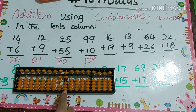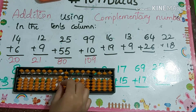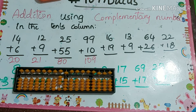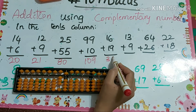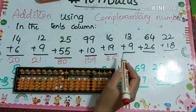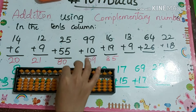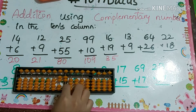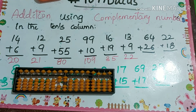Next: 16 plus 19. For the 9, we use plus 10 minus 1, giving the answer 35. Next: 13 plus 9 — again plus 10 minus 1 — so the answer is 22.